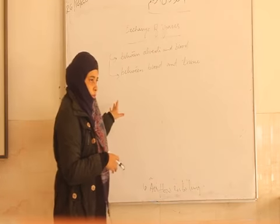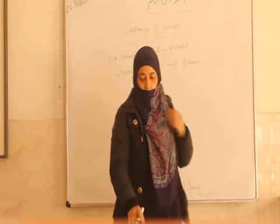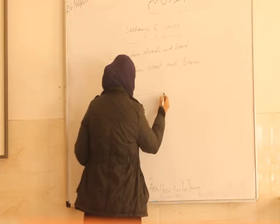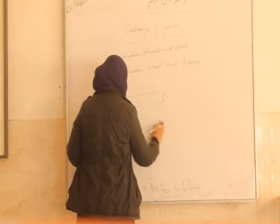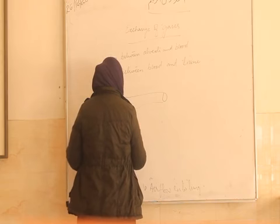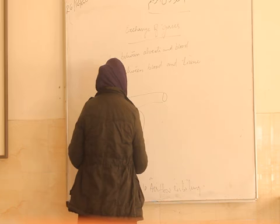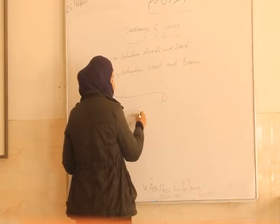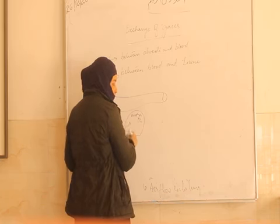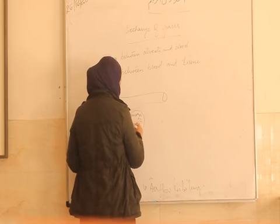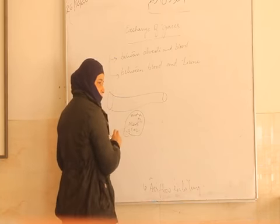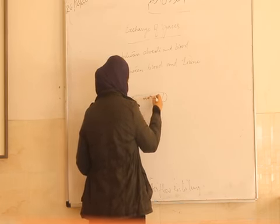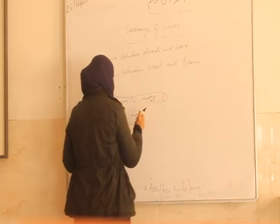So this is the rule. Suppose it is an alveoli — here when we inhale, more oxygen is here and less carbon dioxide. Here, less oxygen and more carbon dioxide. So automatically, diffusion occurs.